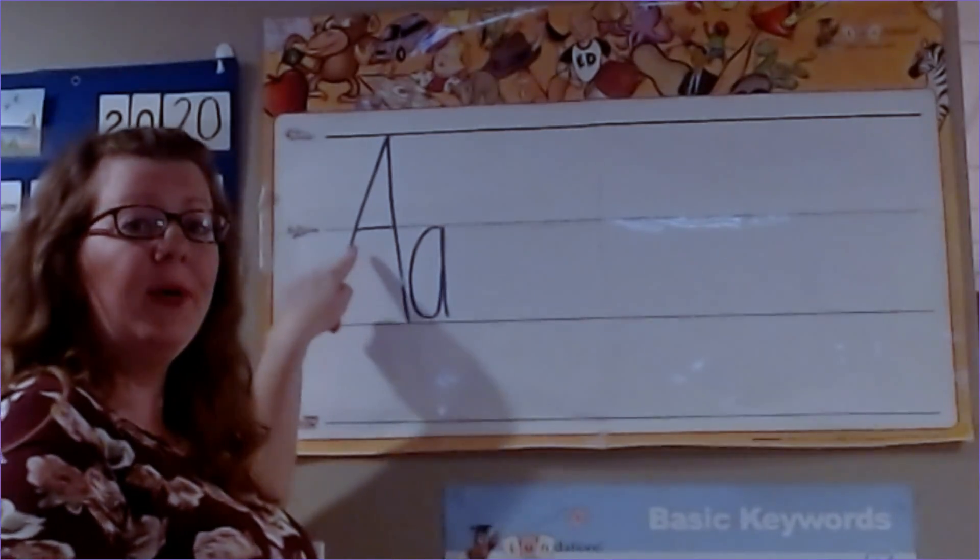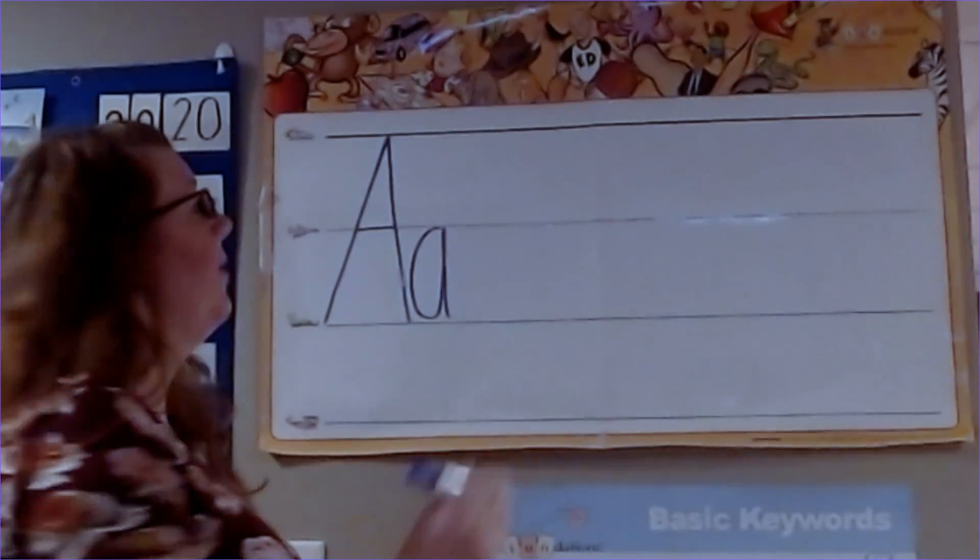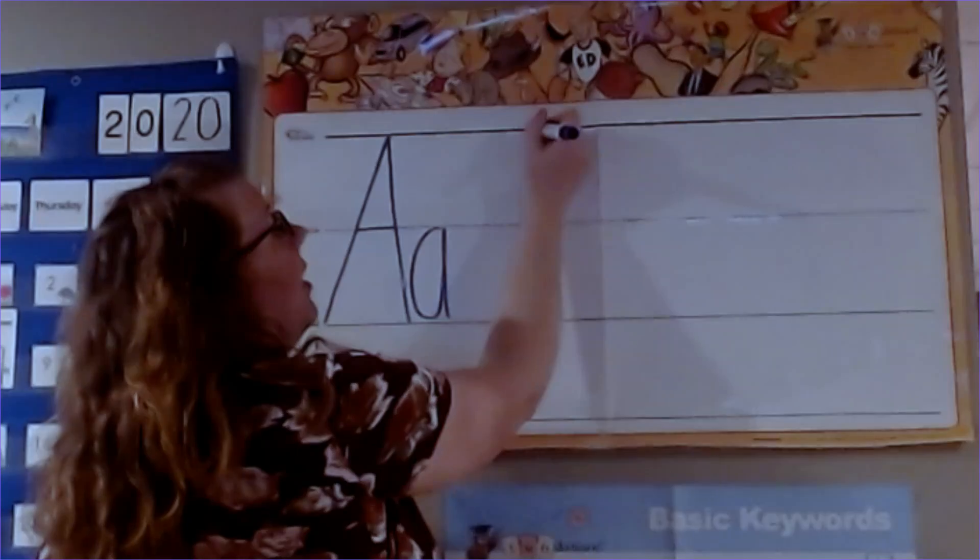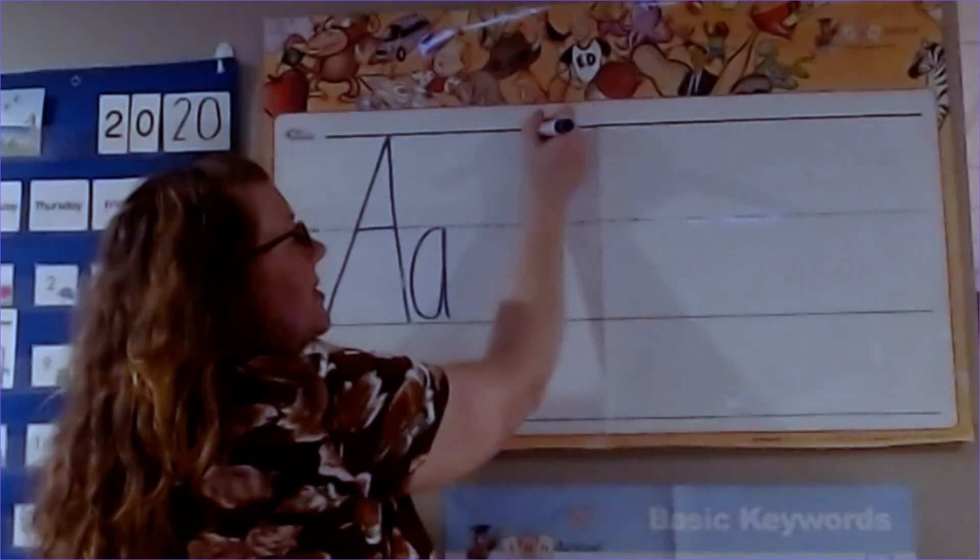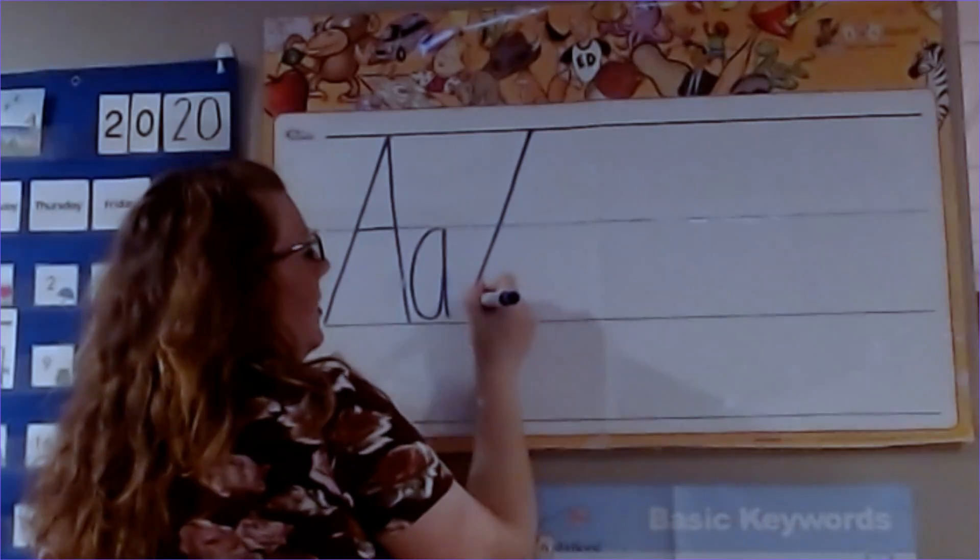Our uppercase A starts all the way at the very top at the skyline. We're going to take our marker and slide down to the grass.